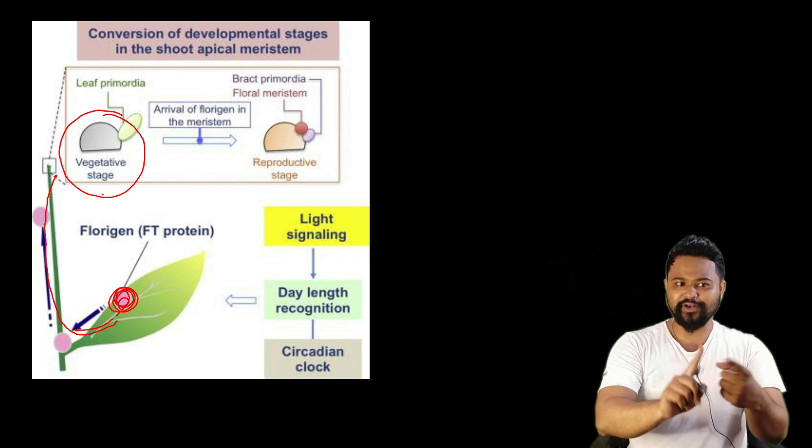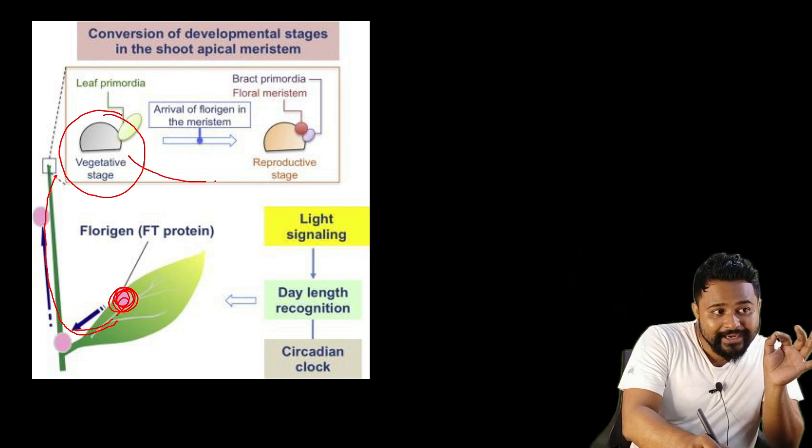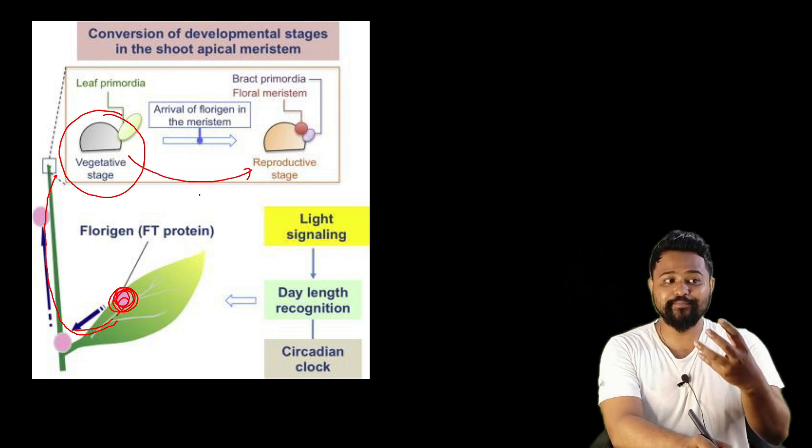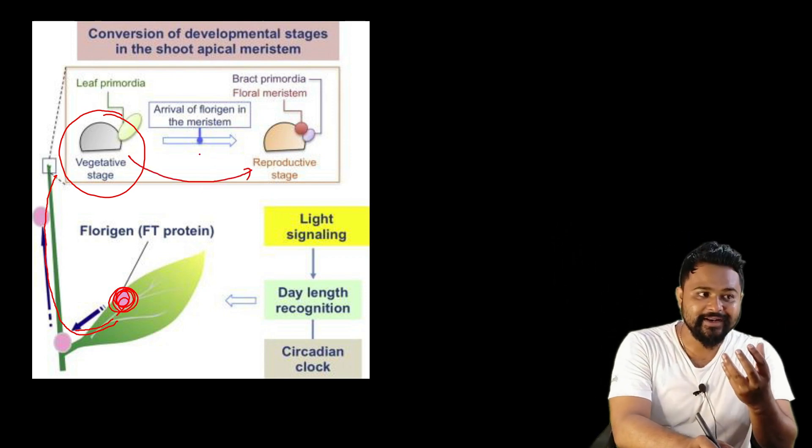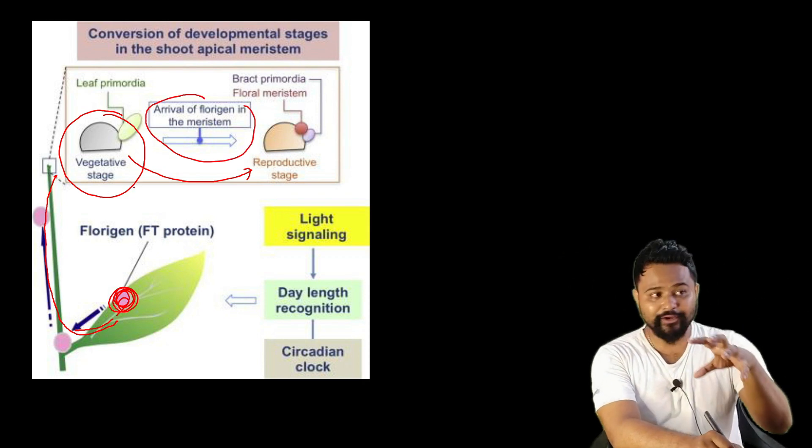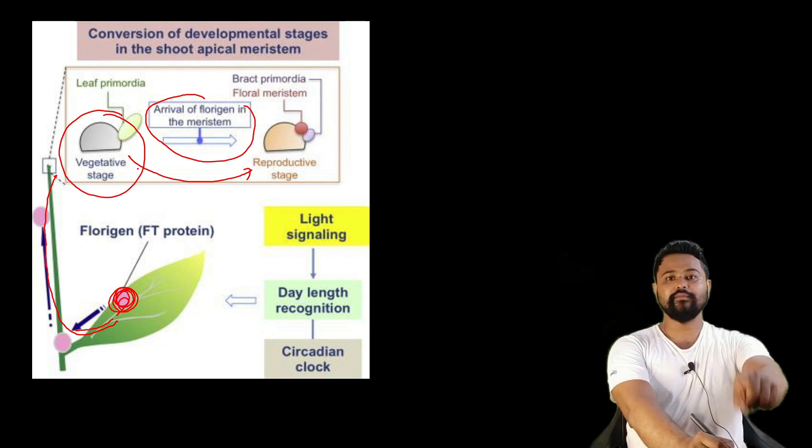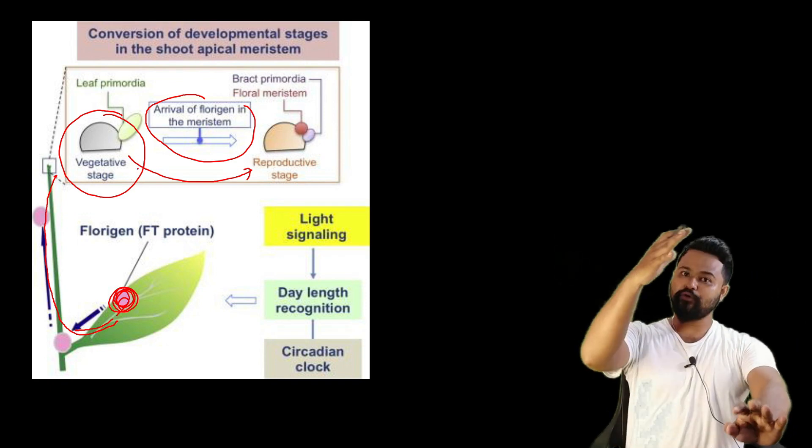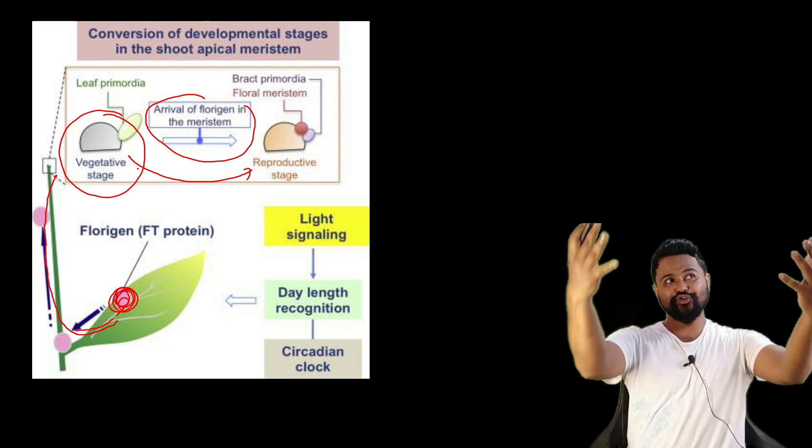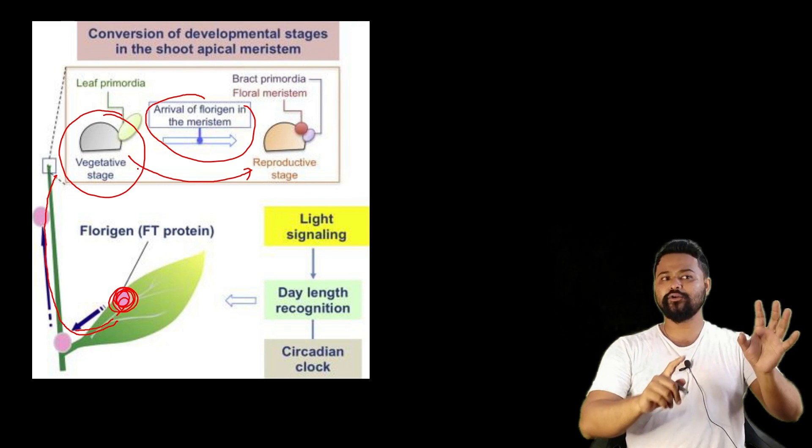The vegetative bud will finally change to reproductive bud by reproductive stage. Arrival of florigen in the meristem - the florigen arrives in the meristem. If the plant has proper maturity, the vegetative bud will start flowering.